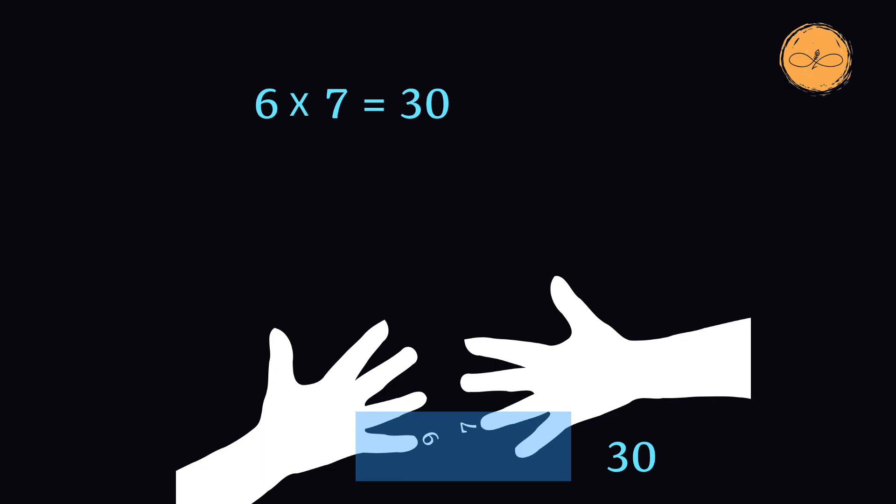Now we count the fingers which are above the fingers which are touching. On the left hand we have 4 and on the right hand we have 3. We then multiply these: 4 times 3, which is 12. So we add 30 and 12 to get 42, and in fact 6 times 7 is 42.